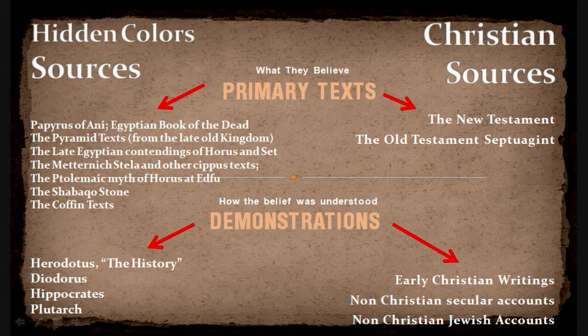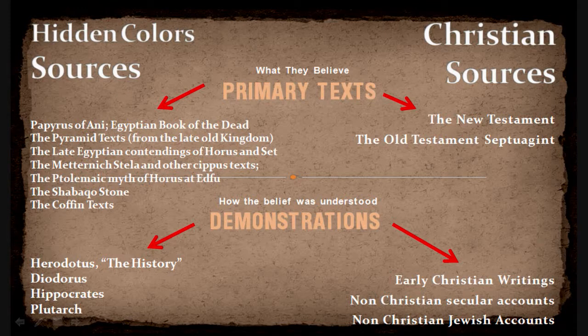You have the text saying one thing, and then you have people who read those texts or who were around those people that begin to speak about what they believe. On the left you only have Herodotus, Diodorus, Plutarch, and Hippocrates — people who basically spoke about what they saw in Egypt, the Egyptians, and what their beliefs are. The only problem is that the Hidden Colors people really don't like the fact that a lot of the people who spoke about Egyptian beliefs were Greeks. But they really shouldn't have a problem with it, because in Hidden Colors 2 they did say that the Greeks were their cousins.